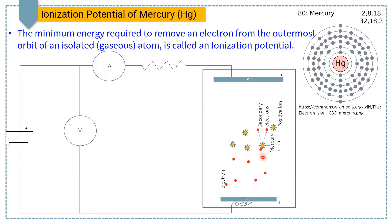As the attraction of electrons increases, their kinetic energy also increases. These high kinetic energy electrons, when they collide with the mercury atoms, ionize them, and as a result, secondary electrons are produced. Electrons emitted from the cathode are called primary electrons, and electrons emitted from the mercury atom after its ionization are called secondary electrons.